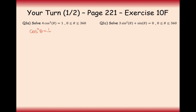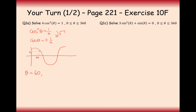Question 1: cos²θ = 1/4. Square rooting both sides gives cosθ = ±1/2. For cosθ = +1/2, the cosine graph gives solutions at 60° and 300°. For cosθ = −1/2, we get 120° and 240°. So the four solutions are 60°, 120°, 240°, and 300°.